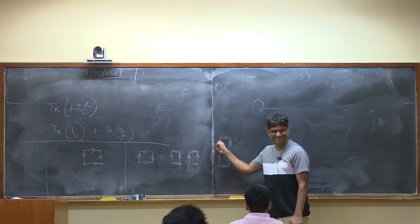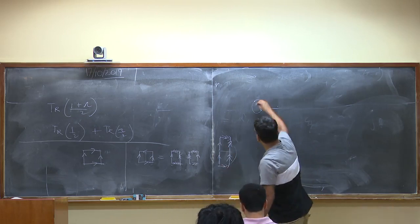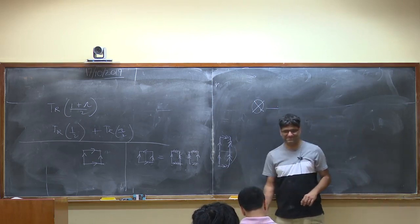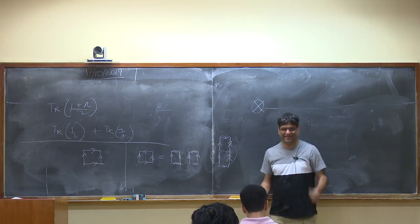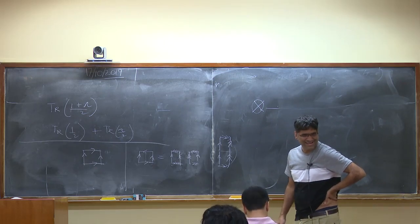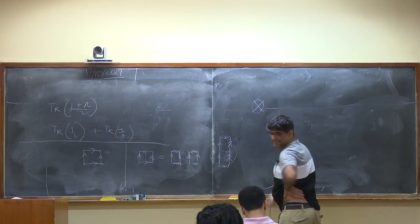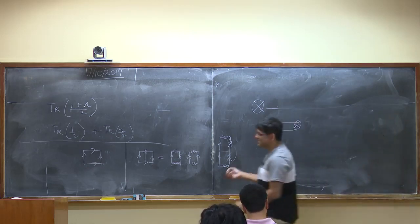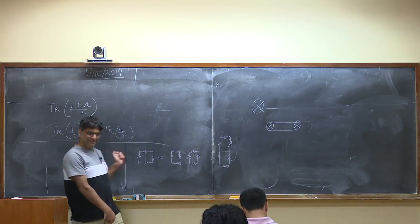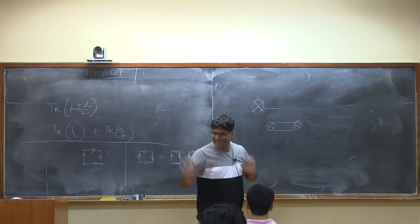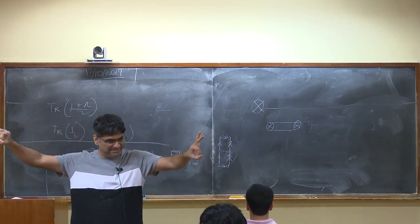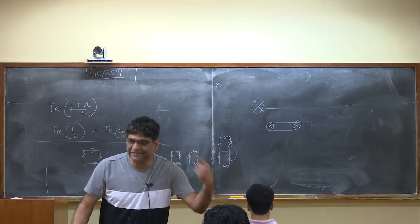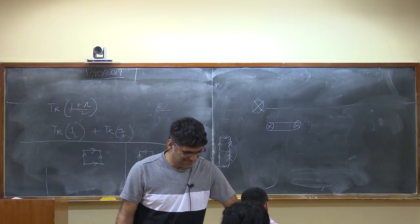This identification — opposite ends of the circle identified — is called a cross cap. So the Klein bottle is equivalently a cylinder with two cross caps. A normal cylinder just has some boundary conditions at the two ends; here there's no boundary in the ordinary sense, but instead this odd identification at each end. In the bulk, fields are free — the identification only happens at the boundaries.